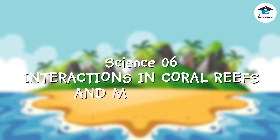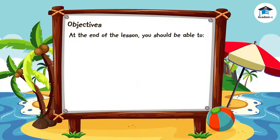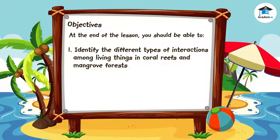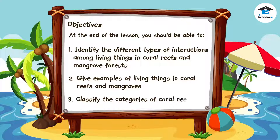Science 6: Interactions in Coral Reefs and Mangroves. Objectives: At the end of the lesson, you should be able to identify the different types of interactions among living things in coral reefs and mangrove forests, give examples of living things in coral reefs and mangroves, and classify the categories of coral reefs.